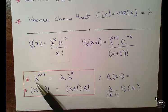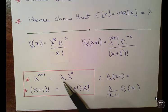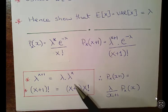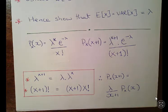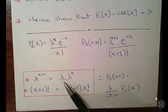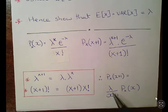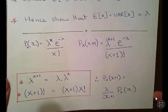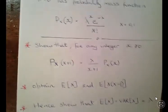Here's how they change. Lambda to the x plus 1 is lambda times lambda to the x. And x plus 1 factorial is x plus 1 times x factorial — using the rules of factorials and powers. Essentially we can factor out lambda over x plus 1, leaving lambda over x plus 1 times the probability mass function. It's a fairly simple calculation that gets us off to a good start.